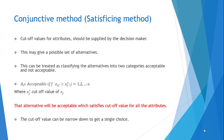For this method, the cutoff value for attributes should be supplied by the decision maker. The decision maker should supply the cutoff values for every attribute. For example, if four attributes are given, then four different cutoff values should be provided.